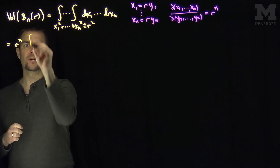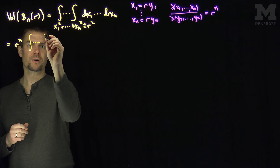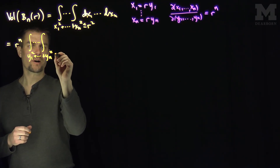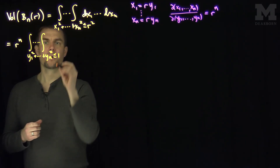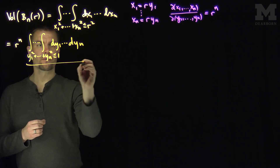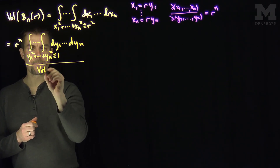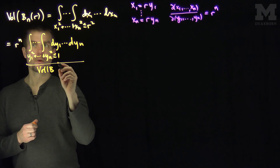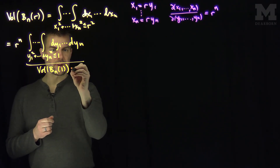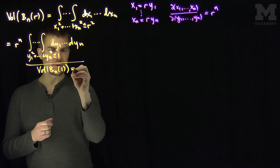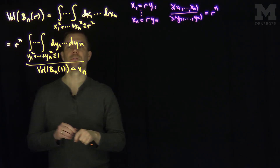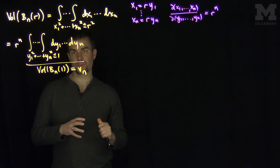That allows us to reduce to studying the integral over y1 squared plus yn squared less than or equal to 1, of dy1 through dyn. We'll call this the volume of the unit ball in n dimensions. We're going to call this expression V_n — the volume of the ball in n-dimensional space of radius 1 — and make a recursion relationship for it.